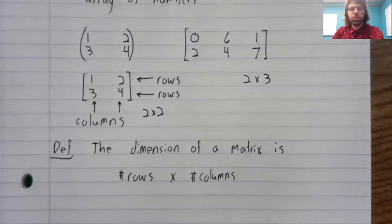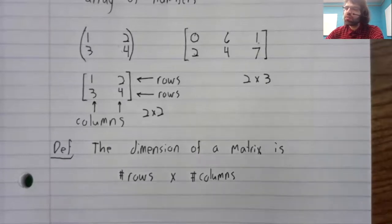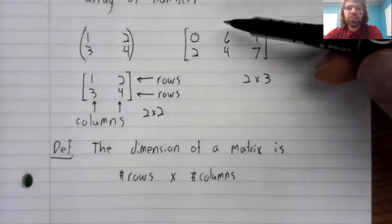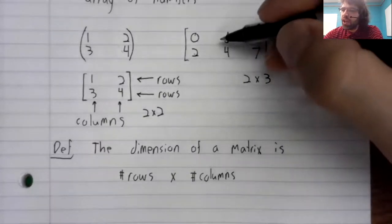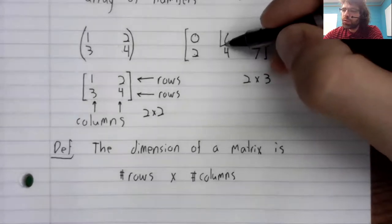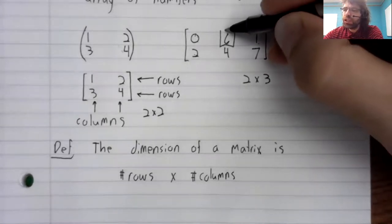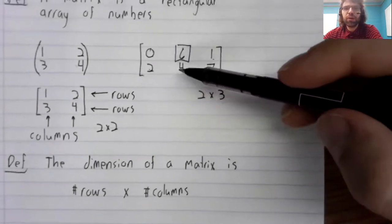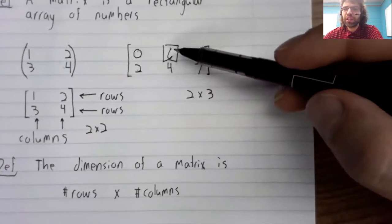Some final notation. Suppose we have a matrix, say this matrix, and we want to talk about one of its entries. We want to talk about this six, for example.